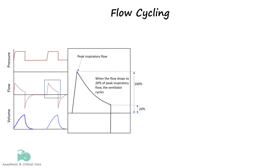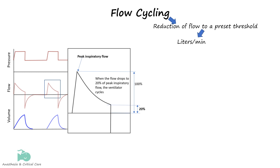With flow-cycled ventilation, the ventilator cycles into the expiratory phase once the flow has decreased to a predetermined value during inspiration. Looking at the flow waveform, we can appreciate that when the flow is reduced to 20% of the peak inspiratory flow, the ventilator cycles into expiration. The flow-cycling variable can be either a fixed flow value measured in liters per minute or a percentage of the peak flow rate achieved during inspiration.